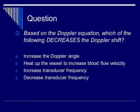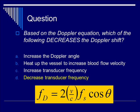Think about the Doppler equation. The correct answer is D, by decreasing the transducer frequency. As you can see from the Doppler equation, the Doppler shift is proportional to the velocity, and also proportional to the transducer frequency. Practically speaking, by decreasing the transducer frequency, you decrease the Doppler shift.